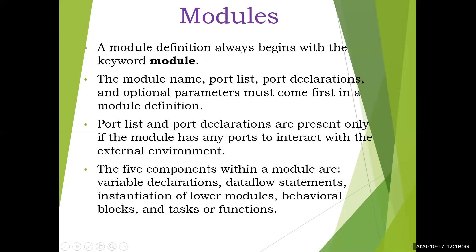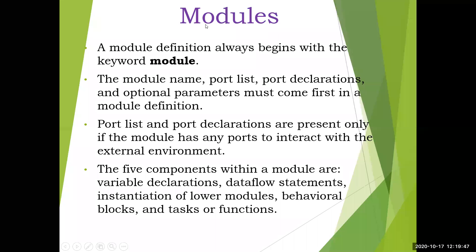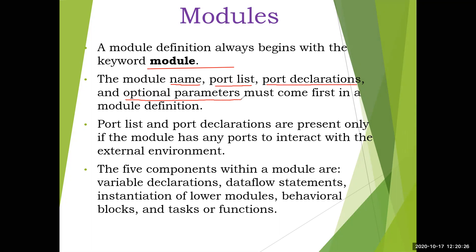A module definition always begins with the keyword 'module', then the module name, then the port list. For the module name there are some rules: number and dollar sign should not come first, underscore can be used, it can begin with alphabets and have numbers in between, and underscore also can come in between. Then the port list comes after the module name - you are listing out what all inputs and outputs are there. Whatever is listed out there, you are differentiating it as input or output - different port declarations are there, like 'in', 'out', and so on. Then optional parameters - if there is any global constant that we are going to declare - all that comes under the module definition part.